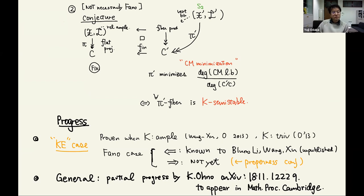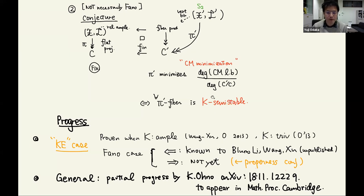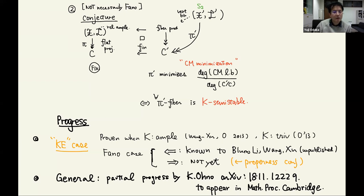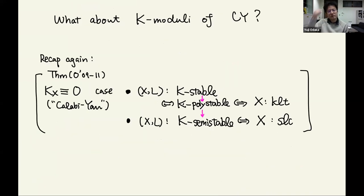For general polarization, the only paper I know discussing this is by Kentaro Ono — he was a student of Ånguel. He related this to some weaker version of k-stability for general polarization, but he didn't find the best base change. So now we come to the story of the Calabi-Yau case.